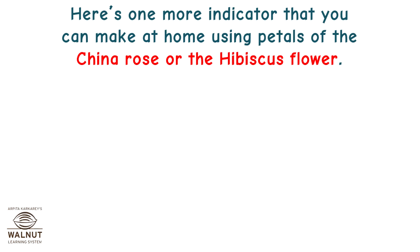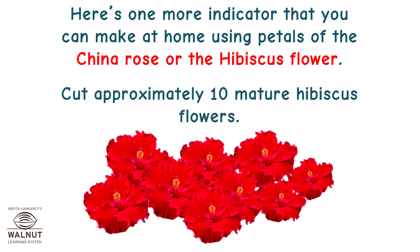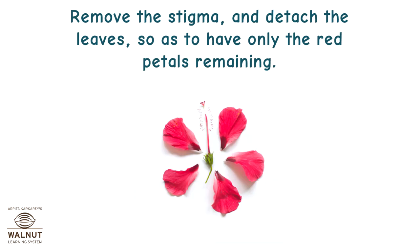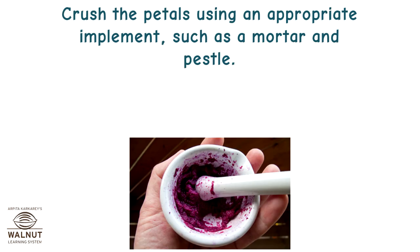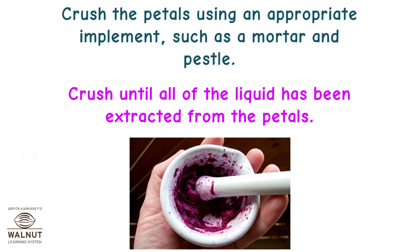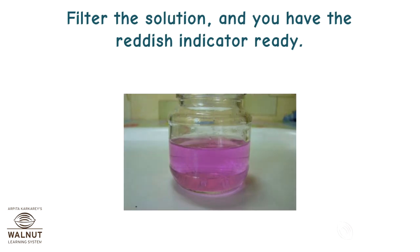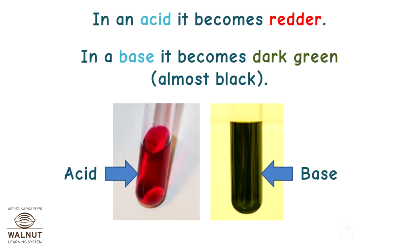Here is one more indicator that you can make at home using petals of the china rose or the hibiscus flower. Cut approximately 10 mature hibiscus flowers, remove the stigma and detach the leaves so as to have only the red petals remaining. Put them in a container and pour approximately 6 ml of ethanol or surgical spirit — the latter works best. Crush the petals using a mortar and pestle until all of the liquid has been extracted. Filter the solution and you have the reddish indicator ready. In an acid it becomes redder; in a base it becomes dark green, almost black.